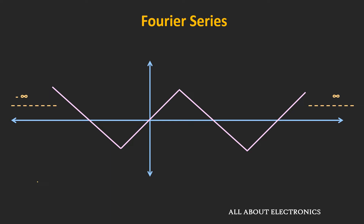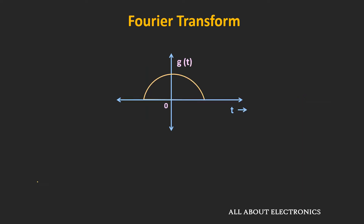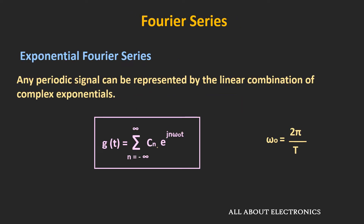For such aperiodic signals, we can find the frequency spectra using the Fourier transform. Let's say we have an aperiodic signal and we want to find its frequency spectra. To understand the Fourier transform in a bit more detail, let's start with the exponential Fourier series, and by applying a certain limiting process, this aperiodic signal can be represented as the summation of complex exponentials.